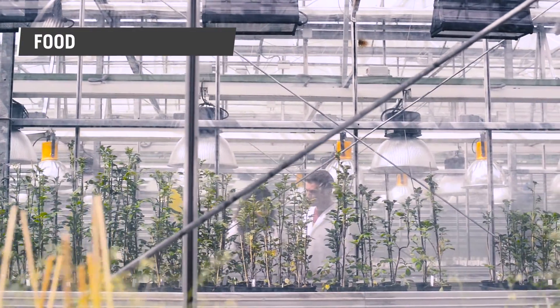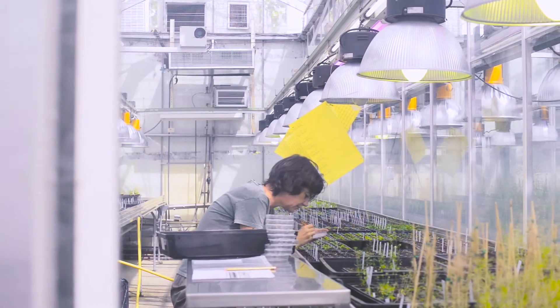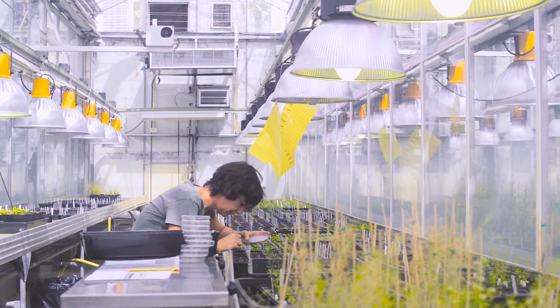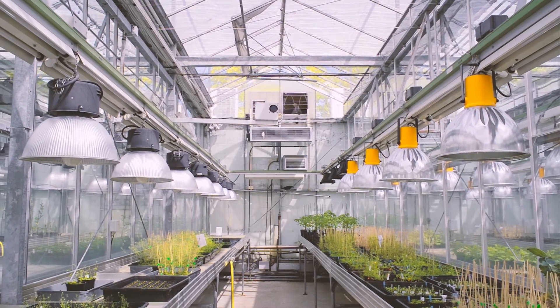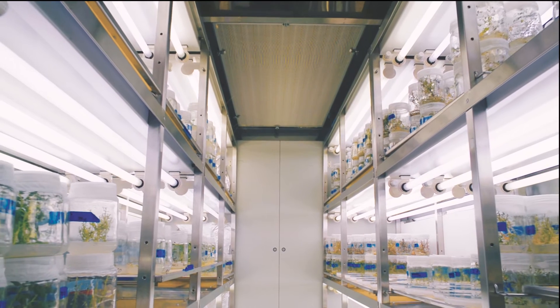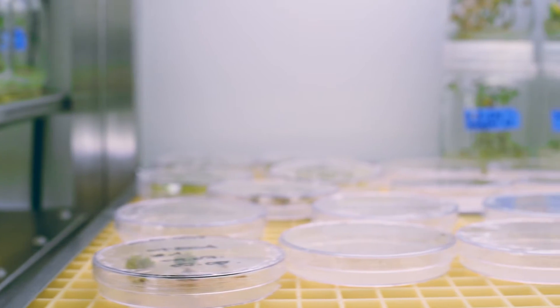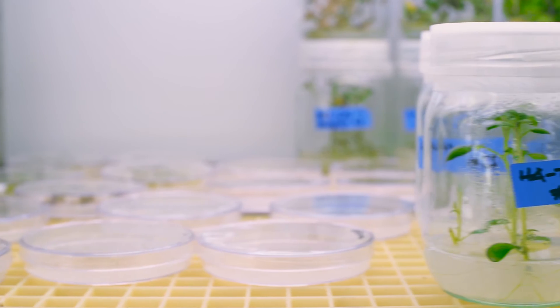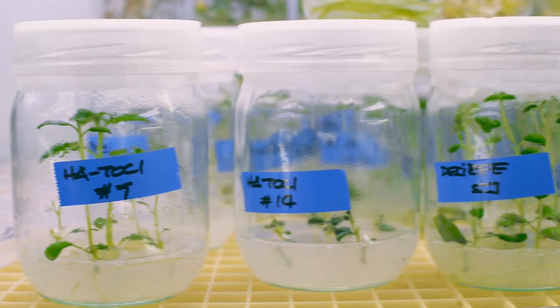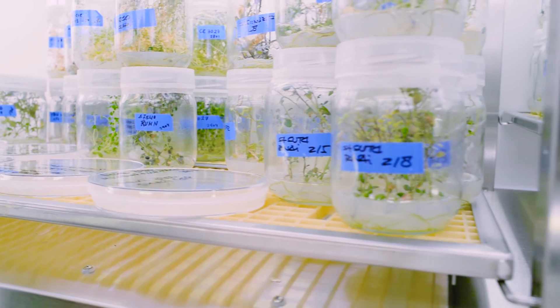Plants also play a key role in feeding a growing population and counteract the effects of climate change on agriculture. At the CNB, we are investigating how plants grow and how they react to environmental changes. We have used this knowledge to select new plant varieties that are more resistant to pathogens or pests, require less fertilizer, or become more productive in extreme climates.